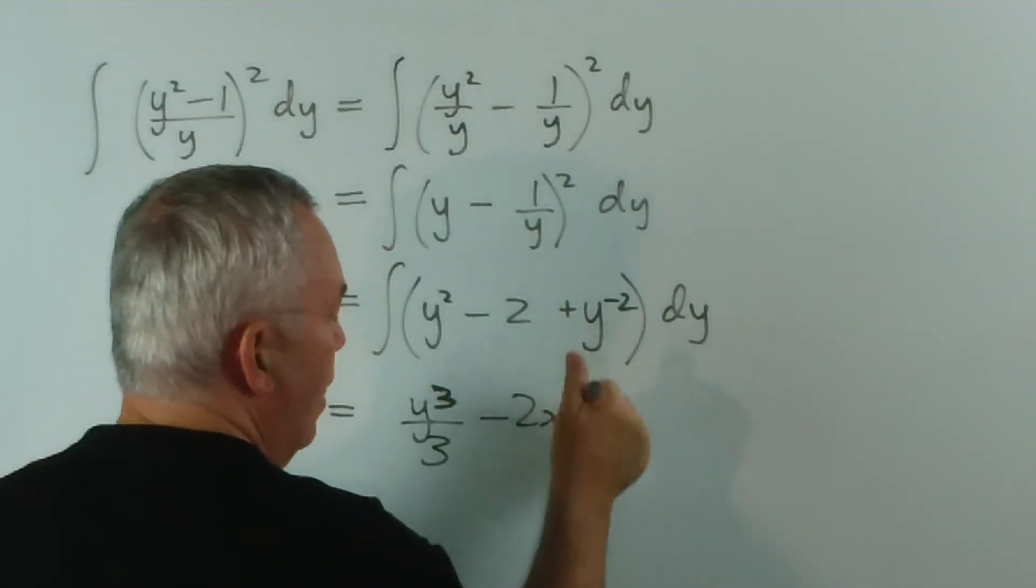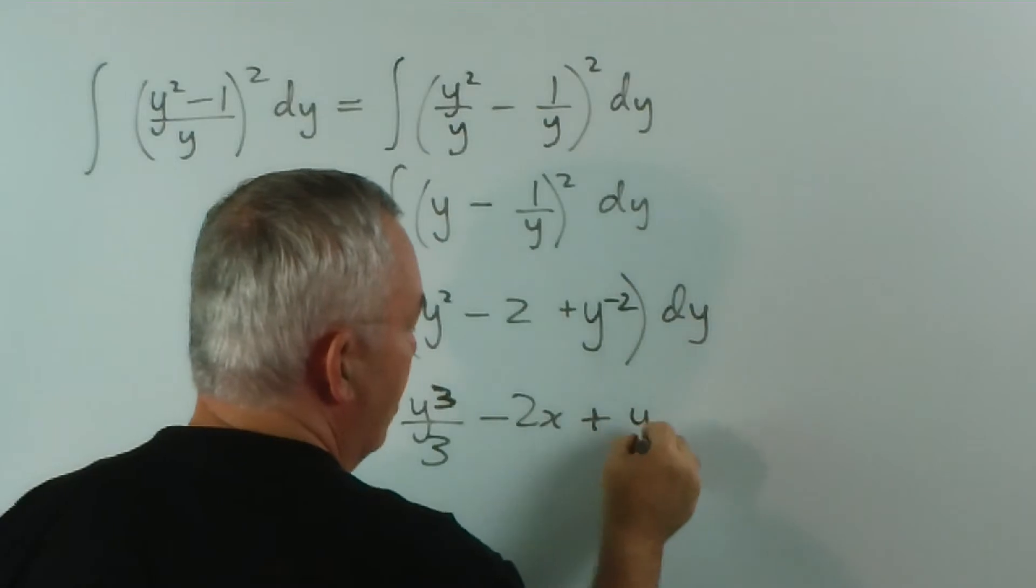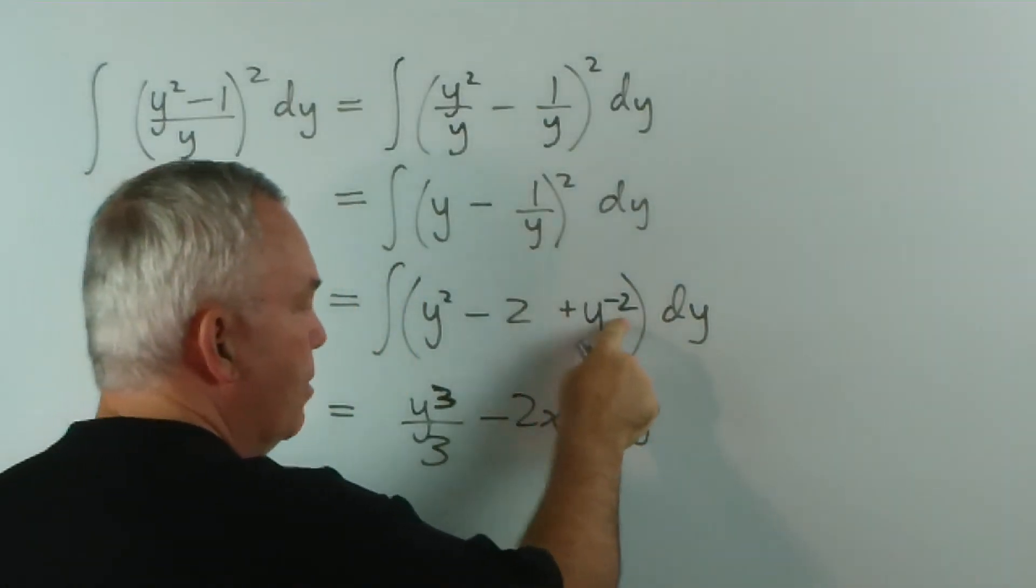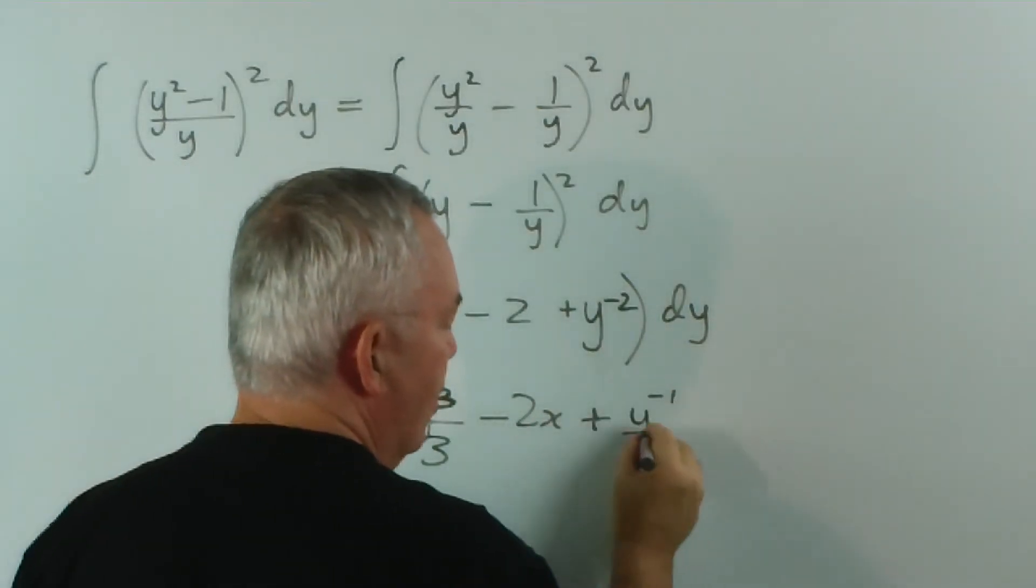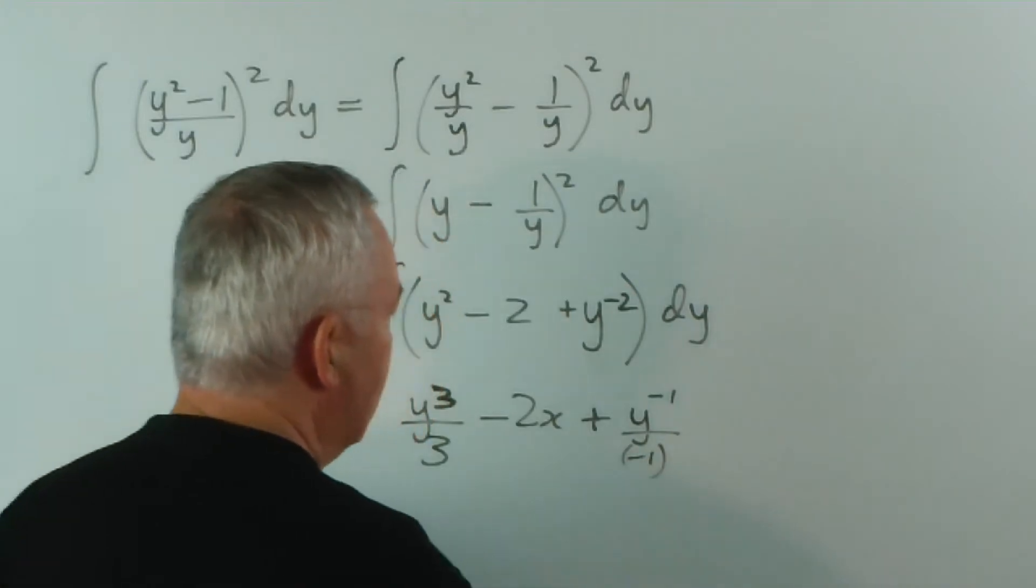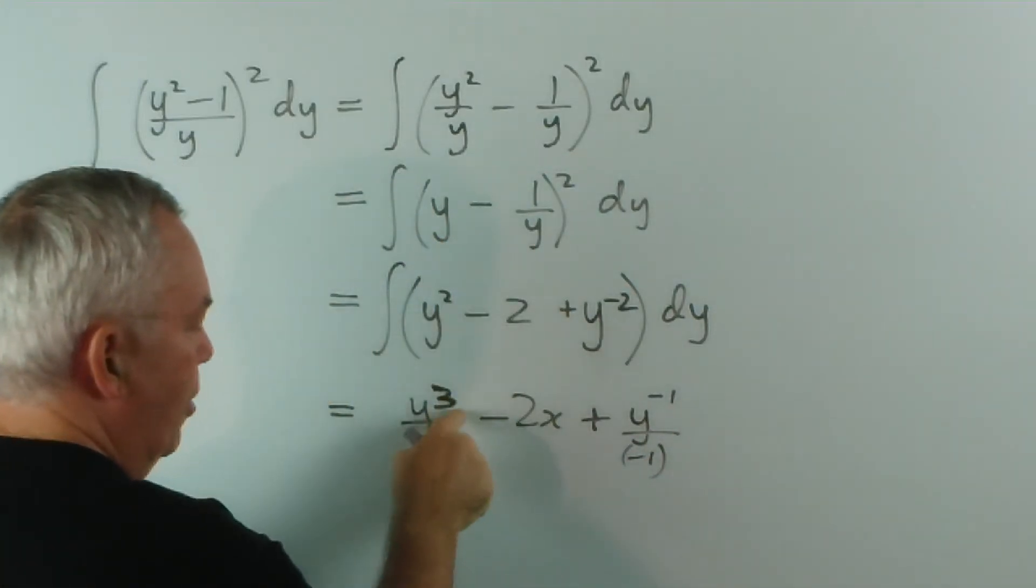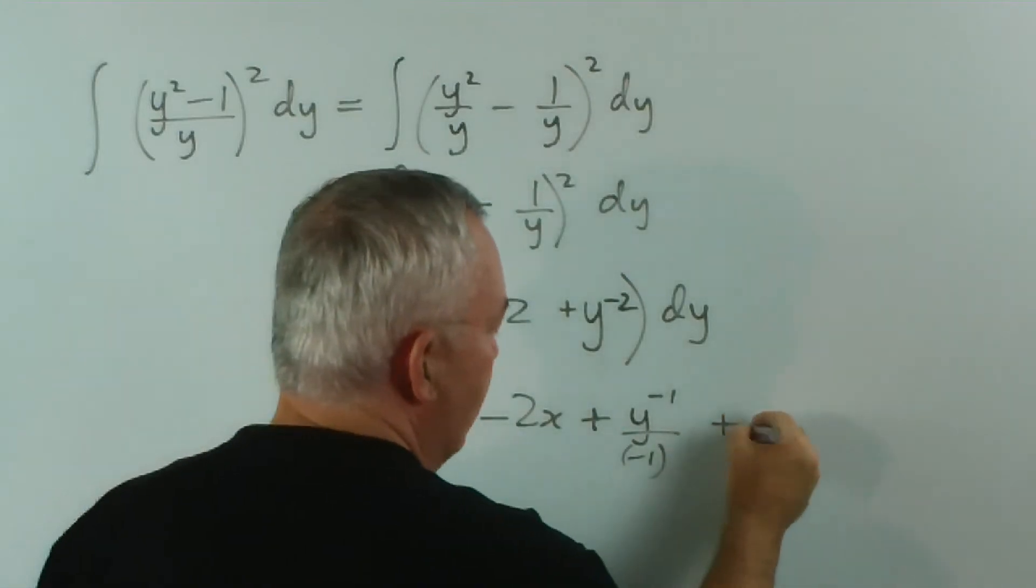And this one is going to be, we add one to this and we write that on the bottom as well. Same as we added one to this to get 3 and write it on the bottom, plus c.